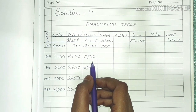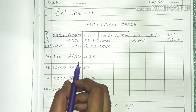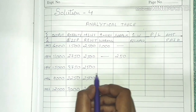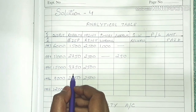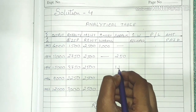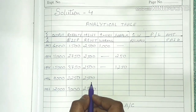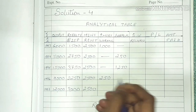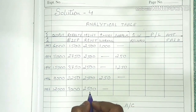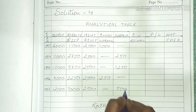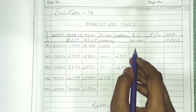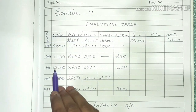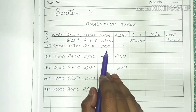Here minimum rent is 2,500 but royalty is 2,750, so we have surplus. Then in year 3, surplus again. Then in year 4, royalty is only 2,250 so short working is $250. In the last year, royalty is $3,000 and minimum rent is $2,500, so $500 will be surplus. Now, there is a condition that we have to recoup in the first three years — from 1993 to 1995 we can recoup.